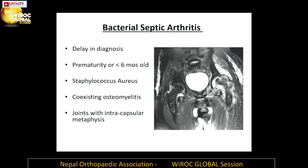Bacterial septic arthritis — the diagnosis is often delayed. This is an orthopedic emergency which is usually a clinical diagnosis supplemented by elevated ESR, and it should not be delayed. It is common in less than six-month-old premature patients, and Staph aureus is the most common cause.